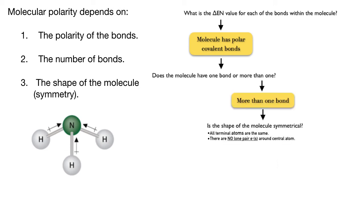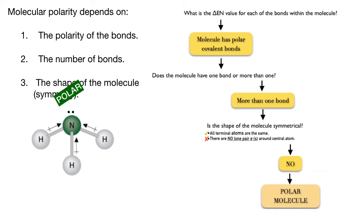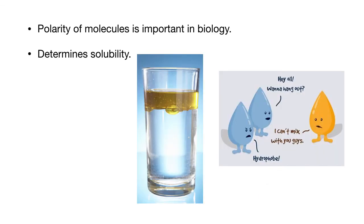Finally, let's take a look at ammonia. It has three polar hydrogen-to-nitrogen bonds, so we need to look at its shape. The central atom is nitrogen and the terminal atoms are three hydrogens — so it does have the same terminal atoms. But we need to figure out whether nitrogen has any lone pair electrons. To satisfy the octet rule, nitrogen needs eight valence electrons. There are three bonded pairs, which makes only six electrons, so nitrogen has one lone pair of unbonded electrons. This molecule is not symmetrical, which means it is a polar molecule. Ammonia is polar.